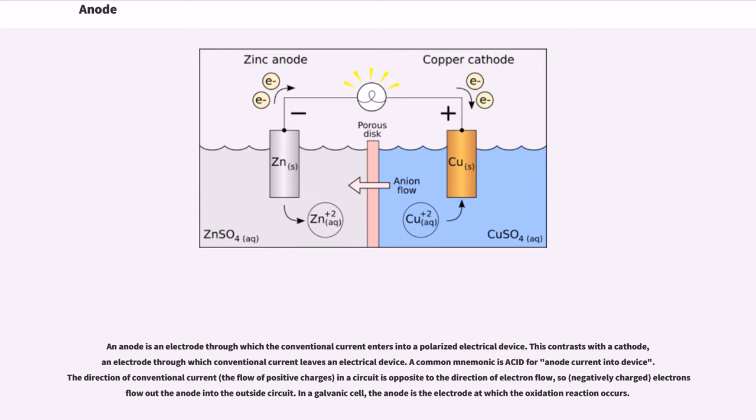A common mnemonic is ACID: Anode Current Into Device. The direction of conventional current, the flow of positive charges in a circuit, is opposite to the direction of electron flow. So negatively charged electrons flow out the anode into the outside circuit.